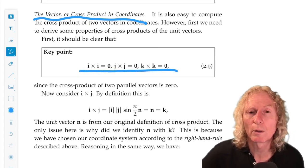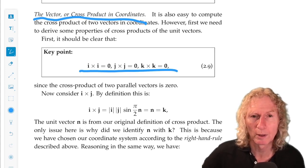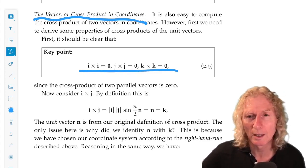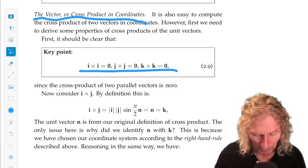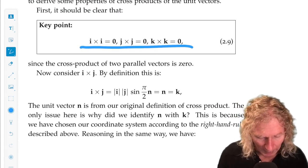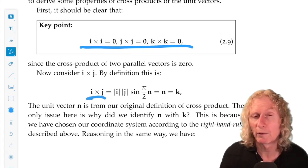Now we want to compute the mutual cross products. Remember, i dot j, j dot k, k dot i, were all zero because they're all perpendicular. Now it's a little bit different. So we use just the definition of cross product.